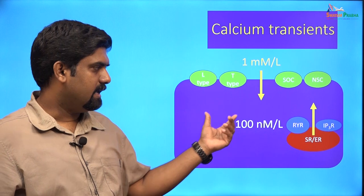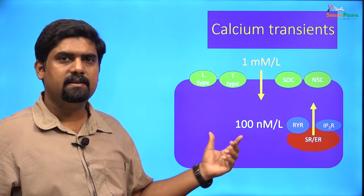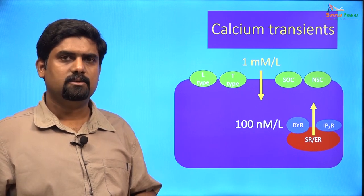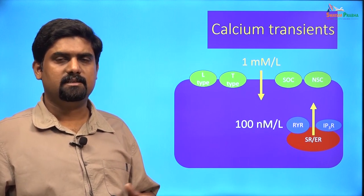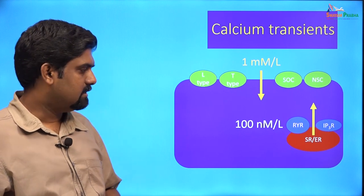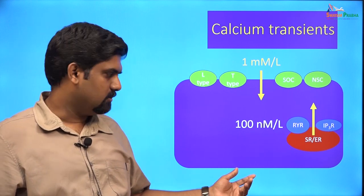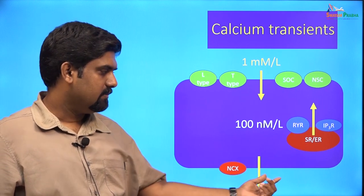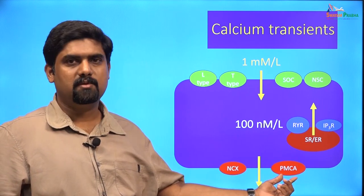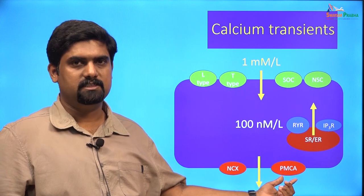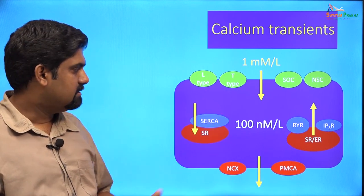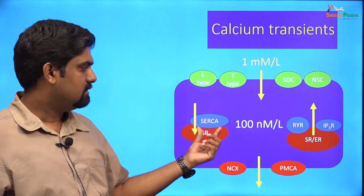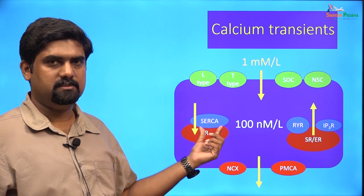If the intracellular calcium concentration remains high, it can lead to cell death. Therefore, cells have evolved mechanisms to clear this increased intracellular calcium. Calcium clearance mechanisms on the cell membrane include the sodium calcium exchanger or NCX and the plasma membrane calcium ATPase or PMCA. Calcium may also be cleared back into organelles like the SR through the sarco-endoplasmic reticulum calcium ATPase.